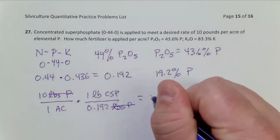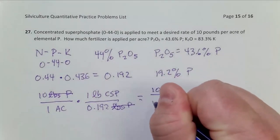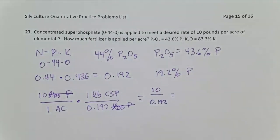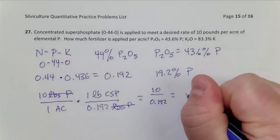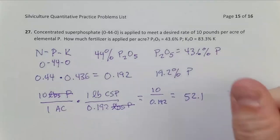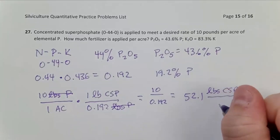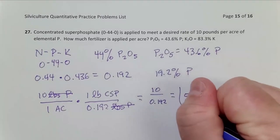So this is going to equal 10 divided by 0.192. It's written out for you in one step without units, which equals 52.1 pounds CSP per acre. And there's my answer.